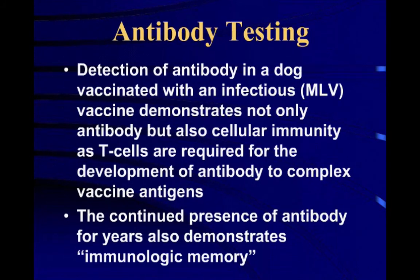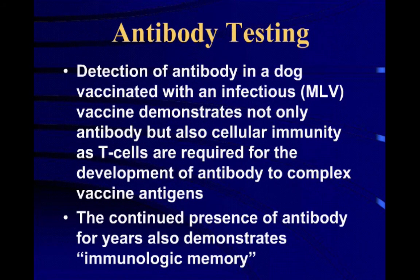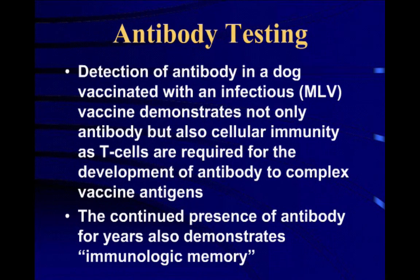Antibody testing — detection of antibody in a dog vaccinated with an infectious vaccine — not only looks at humoral immunity but also looks at cellular immunity, and that's critically important to understand. Most people would say antibody testing has nothing to do with cellular immunity or immunologic memory, but in fact it has a lot to do with both of those, as well as humoral immunity.